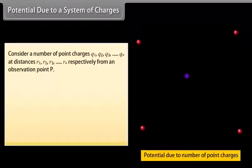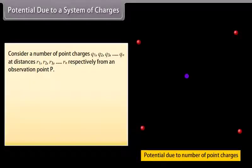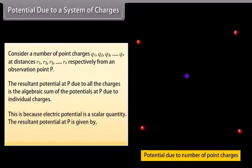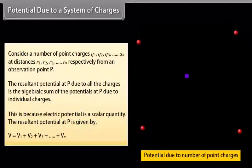For potential due to a system of charges, consider point charges Q1, Q2, Q3, … Qn at distances R1, R2, R3, … Rn respectively from observation point P. The resultant potential at P due to all charges is the algebraic sum of potentials due to individual charges, because electric potential is a scalar quantity. The resultant potential is given by V = V1 + V2 + V3 + … + Vn.